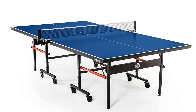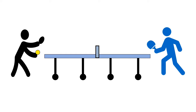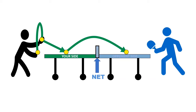Table tennis is played on a table with a net that divides it into two parts. Looking from the side, one player is in black and the opponent is in blue. The service is very different — when serving, you toss the ball, hit it with your racket, and it must bounce on your side first, then cross the net and bounce on your opponent's side.